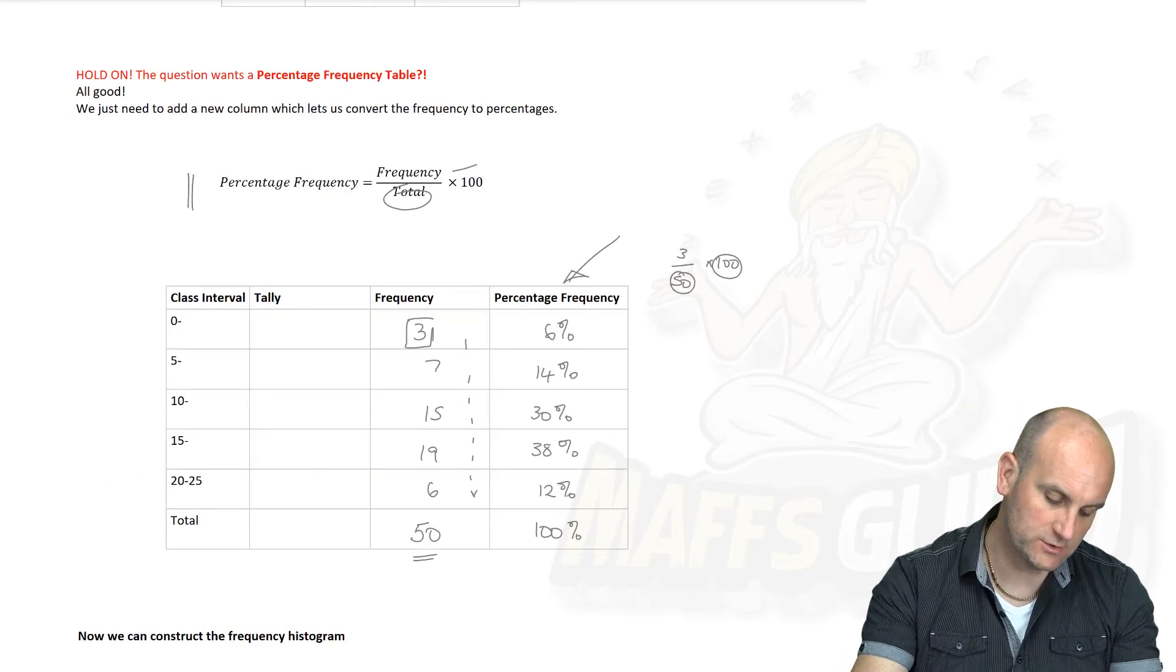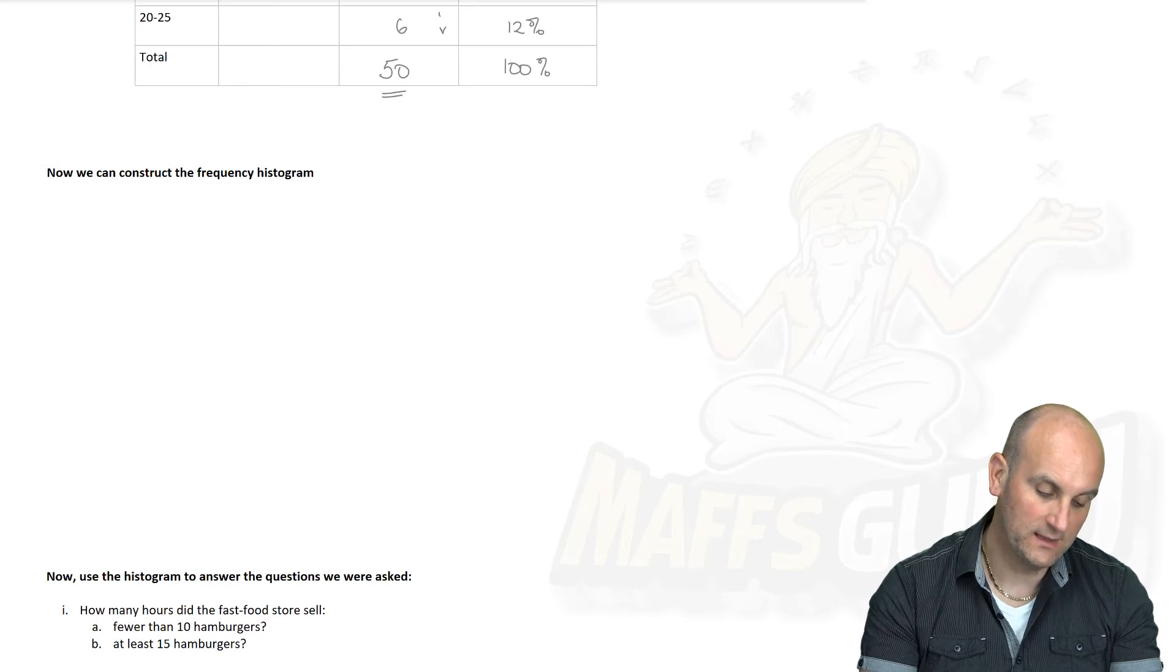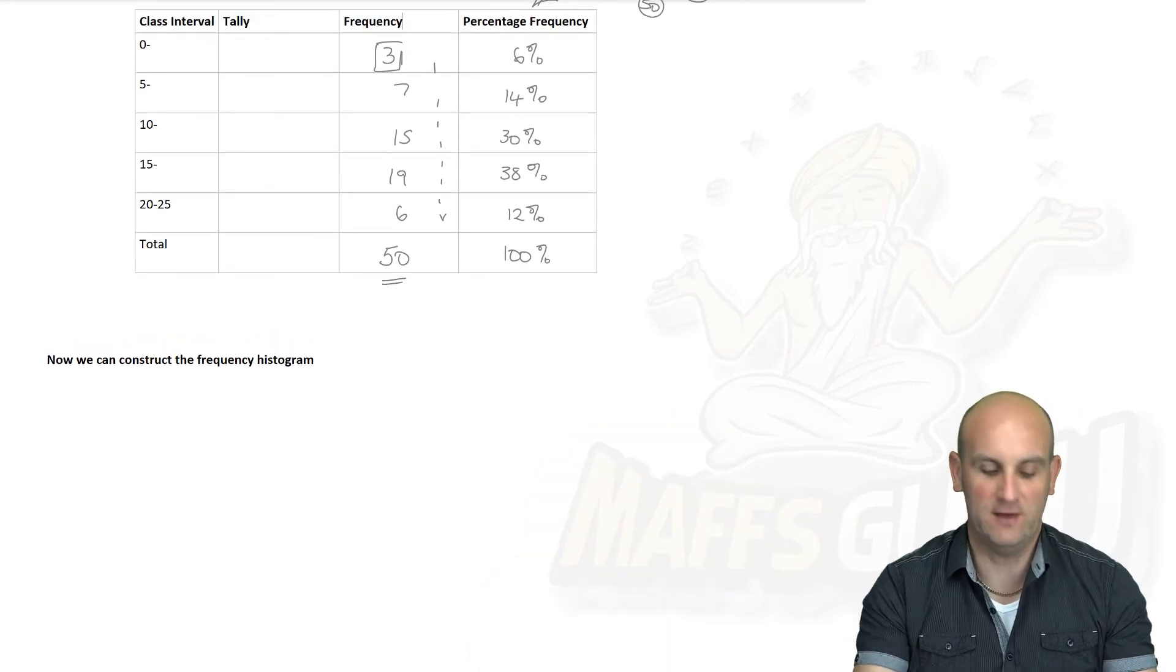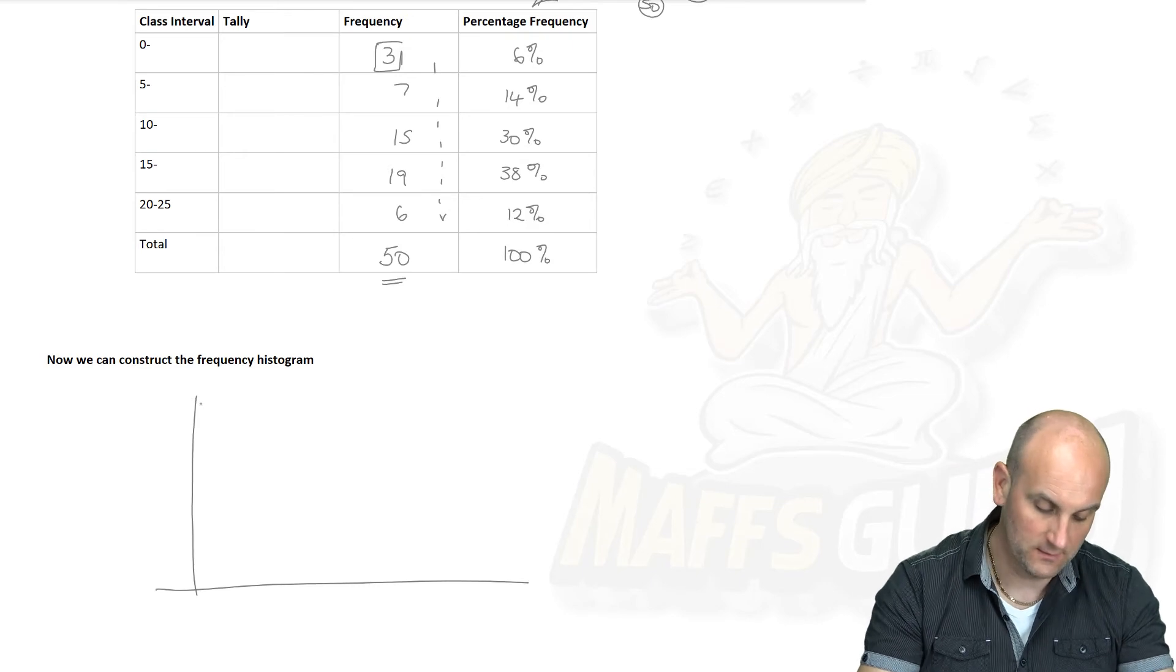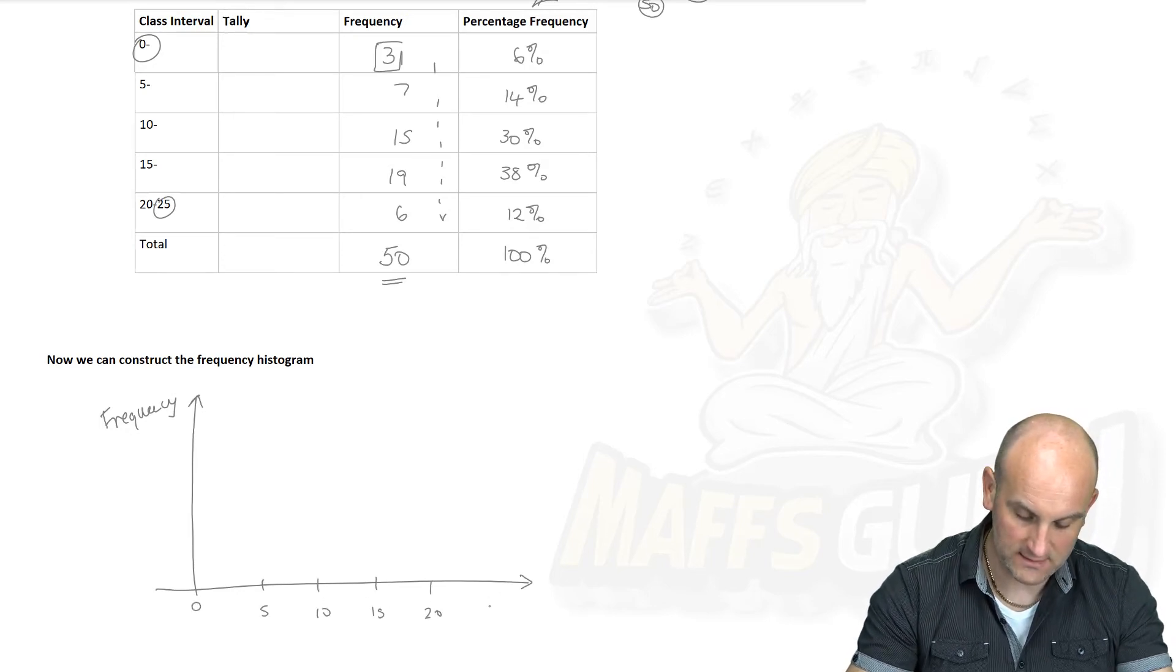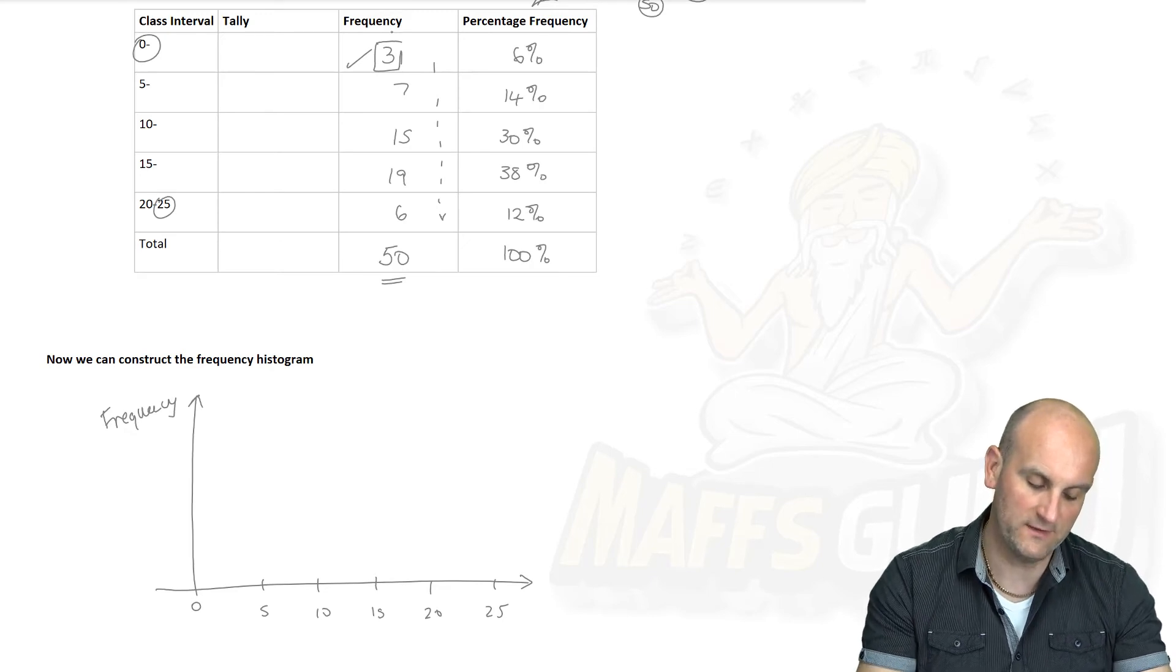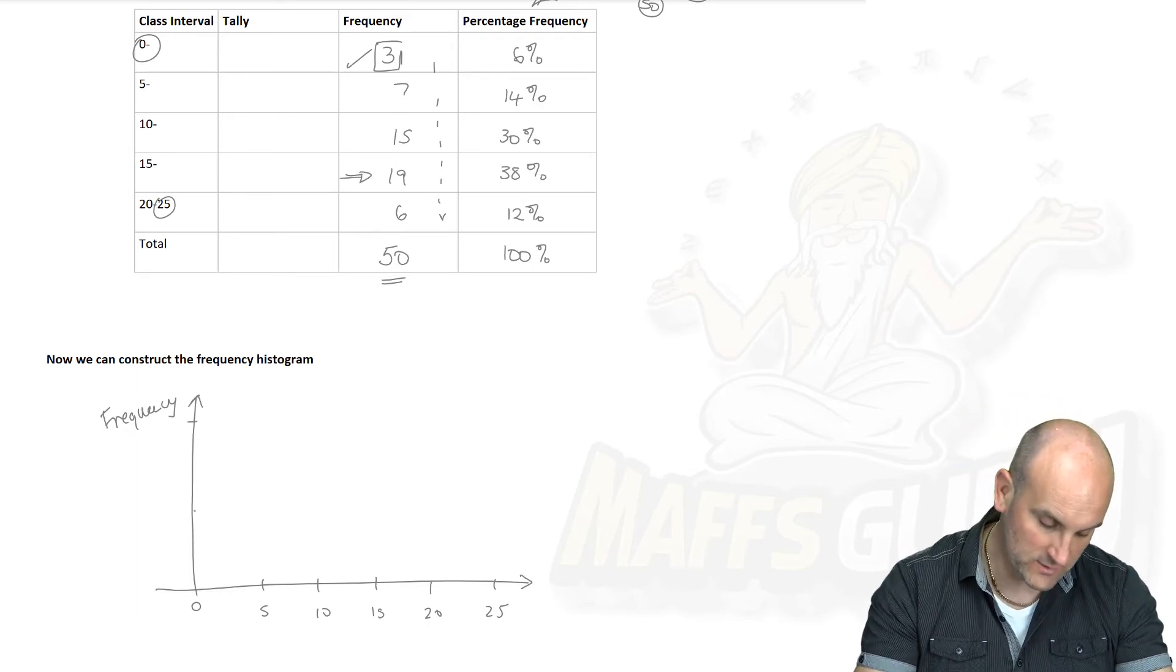Right we've got the information so now we can construct our frequency histogram. Although it wanted that table of percentage frequency maybe we'll use that later. So here we go. Here is my axes drawn. Up the side here I have frequency. Along the bottom I'm going to have my class intervals, my width. Now if you remember this starts at 0 and finishes at 25. So 0, 5, 10, 15, 20 and 25. Right so how high is my first column? It has a frequency of 3 but hold on a moment MathsGuru you haven't got a scale. No I haven't but I now know that my highest frequency is 19 so I'm going to go up to 20. So there is 20, there is 10.